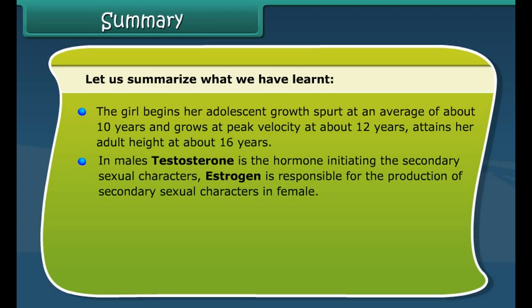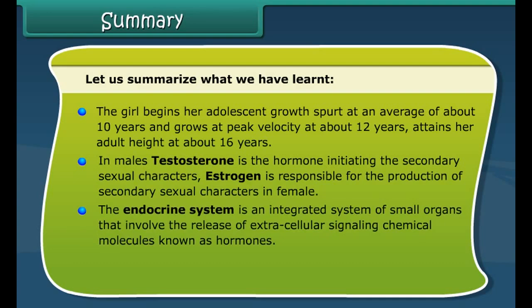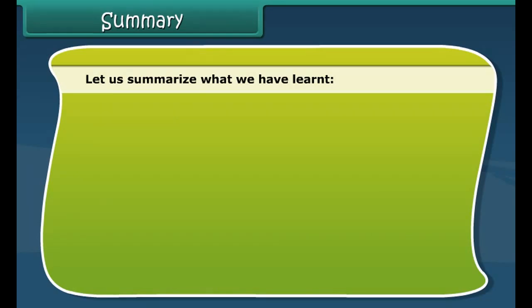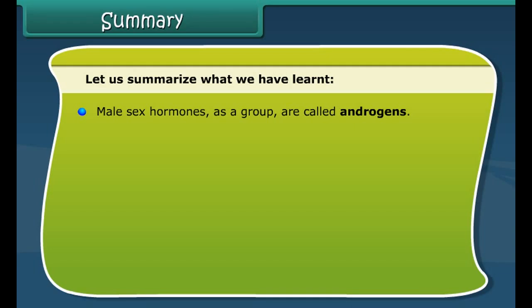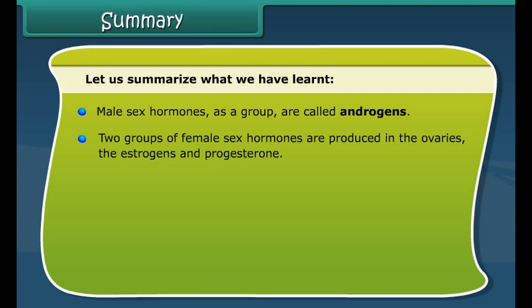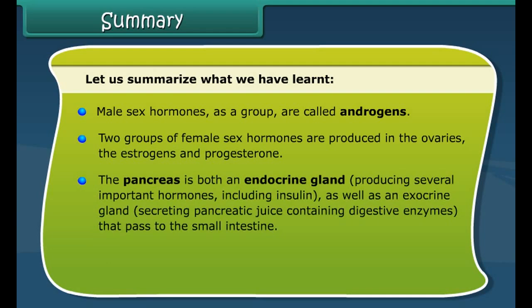Reproductive phases in females: The female reproductive system consists of internal organs including the ovaries, oviducts, uterus, and vagina, as well as external genital structures and the breasts. Menarche — the beginning of menstruation in females after puberty — occurs at about age 15. In the reproductive phase of female life, the menstrual cycle takes place between each menses; the cycle lasts about 28 days. Menopause occurs when this cycle eventually ceases, between the ages of 45 and 55.